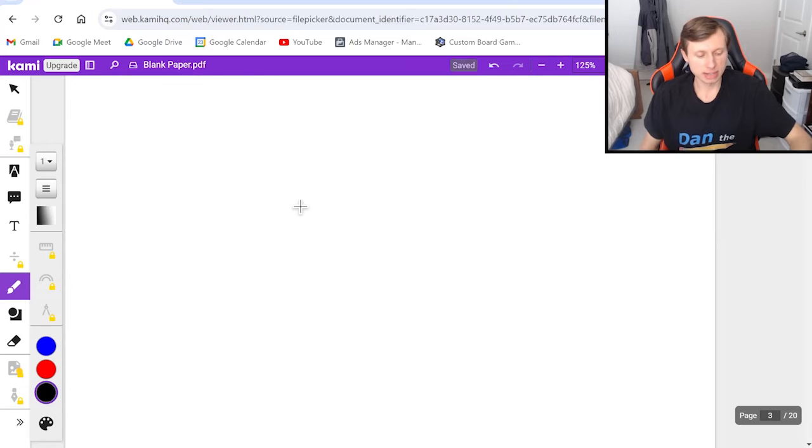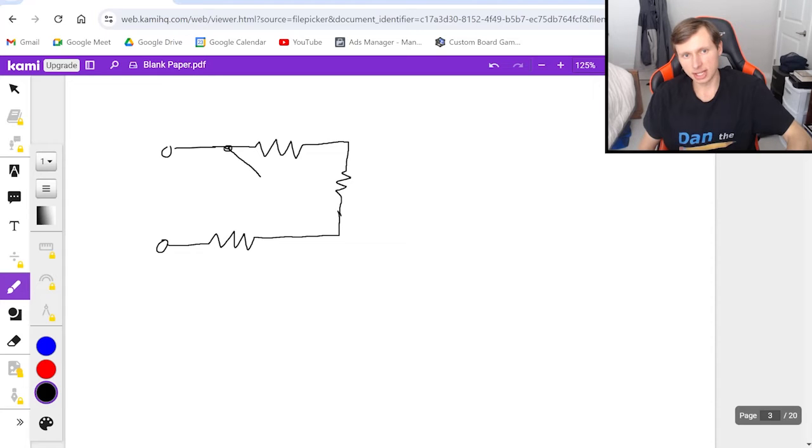I have two more examples for you today. Here's the next one. I want to find the total resistance between these two points, and the circuit's going to look like this. We are going to have a diagonal resistor this time, which always confuses kids. They hate the diagonal resistor.